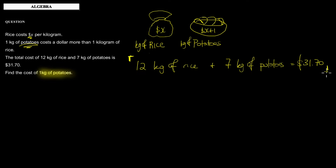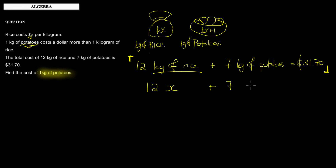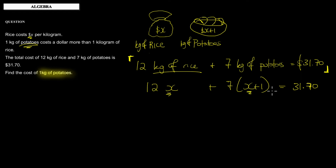Now, if we're going to find the cost of one kilogram of potatoes, we need to put this into an equation. We don't know exactly what a kilogram of rice costs, but we know it's x dollars, so 12 kilograms of rice costs 12 times x dollars. Likewise, seven kilograms of potatoes costs seven times (x plus one) dollars, because that's the cost of one kilogram of potatoes. All of that equals $31.70. Now that we have an equation with x, we can solve for x.